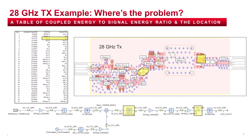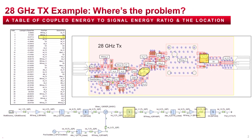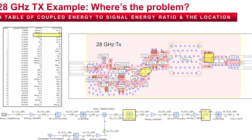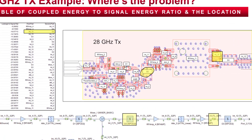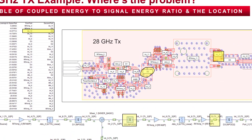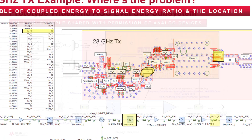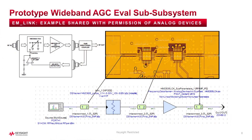PathWave System Design 2021 ships with EMLink examples, including a 28 GHz upconverter and a wideband automatic gain control PCB, shared with the kind permission of Analog Devices.